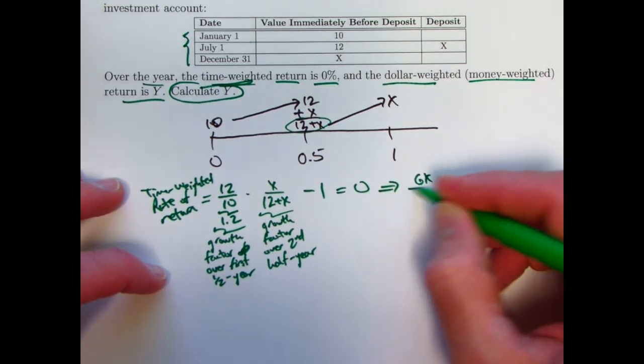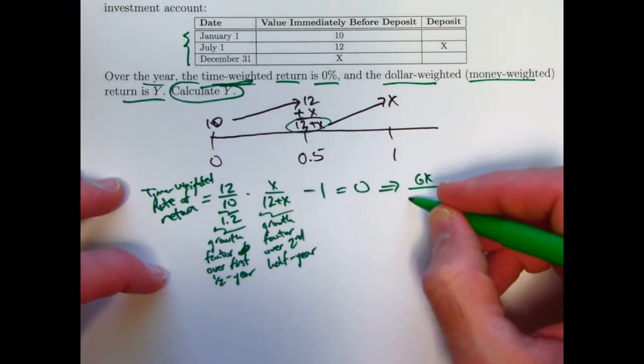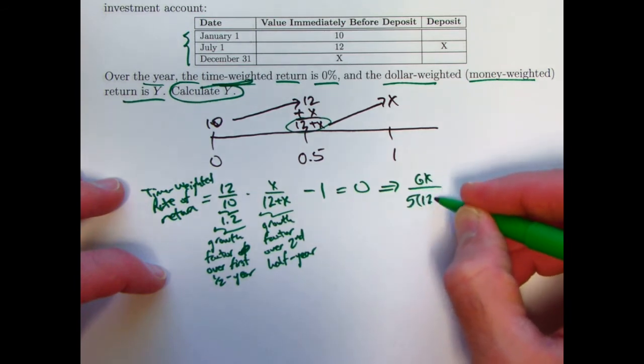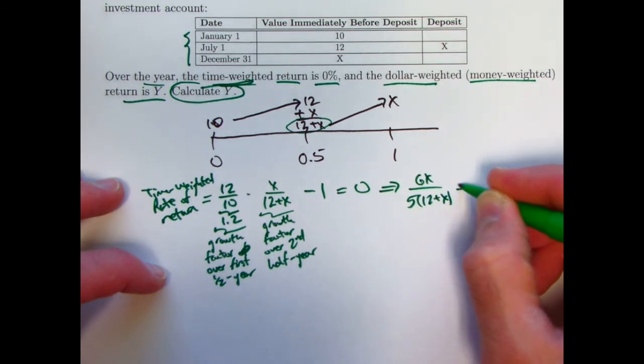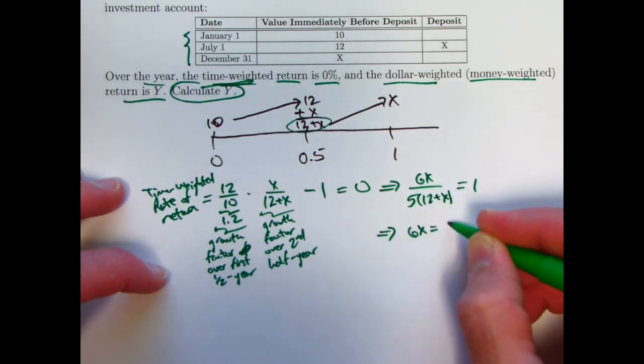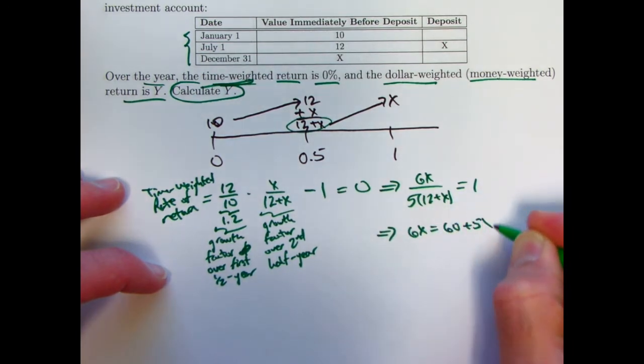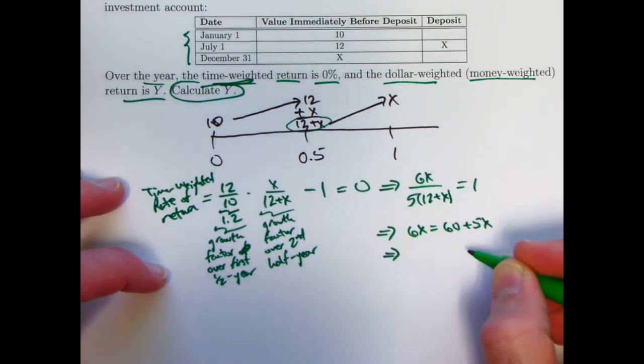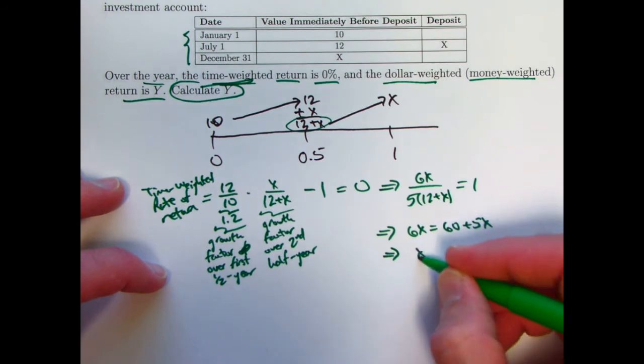We can add 1 to both sides. We can simplify a little bit. We get 6x over 5 times, in parentheses, 12 plus x would equal 1. That would imply 6x equals 60 plus 5x.